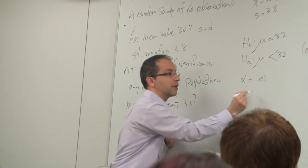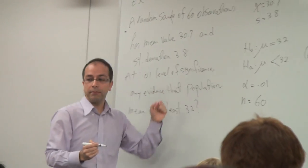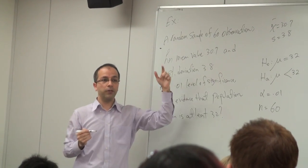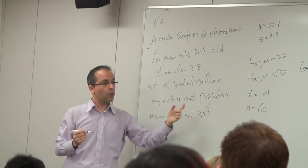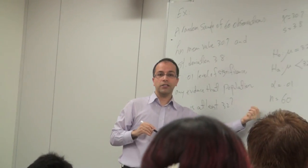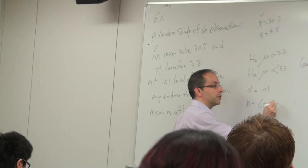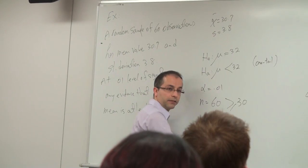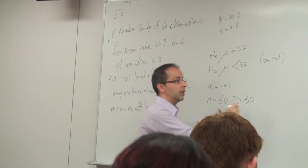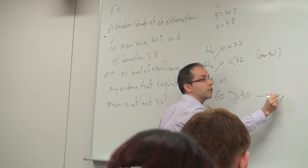The problem doesn't say whether the distribution is normal or not. So we check the sample size. The sample size is large enough—greater than or equal to 30—so we can approximate this distribution by normal. It is almost normal.